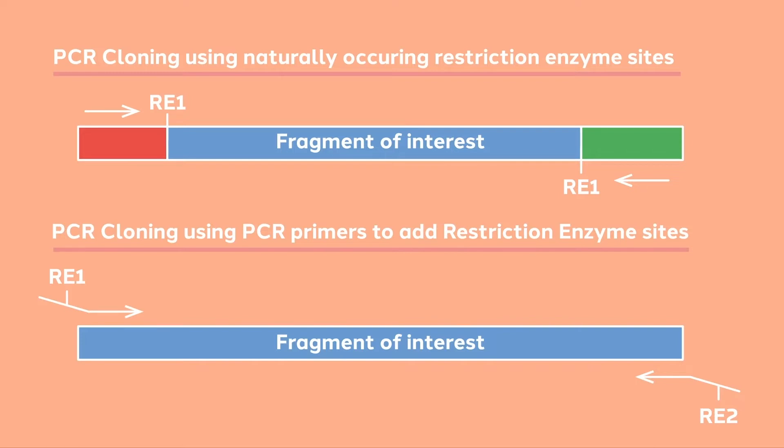A more flexible alternative is to add restriction enzyme sites to the ends of your PCR primers. This allows you to put the enzyme sites of your choice exactly where you want them. Whether you are using native restriction enzyme sites or engineered sites, your cloning procedure would proceed with digestion, fragment purification, and ligation, and on into the cloning cycle.